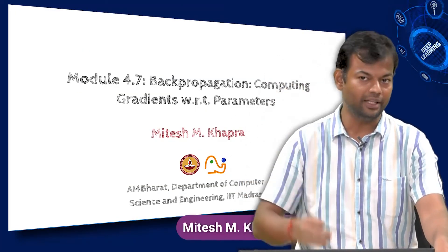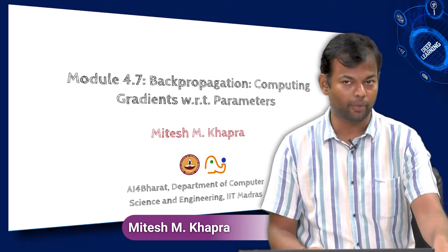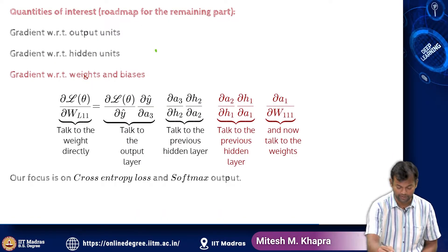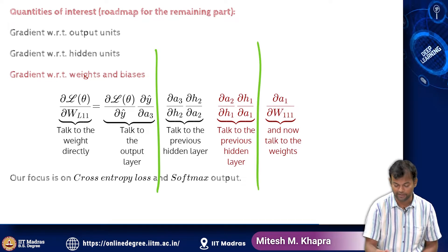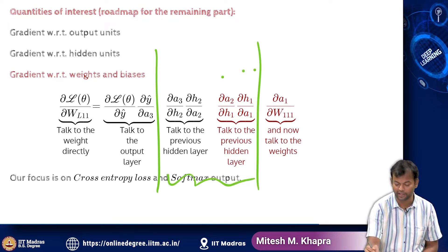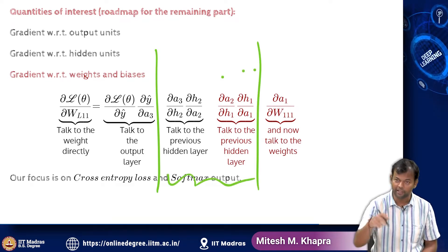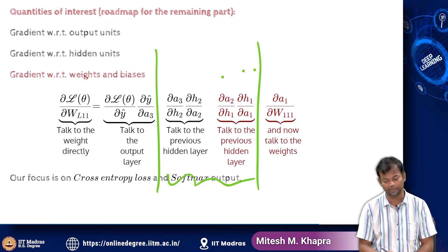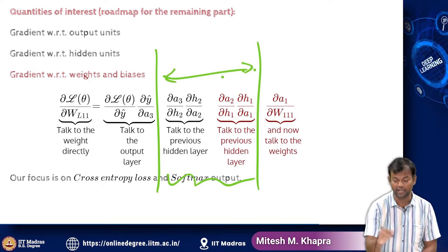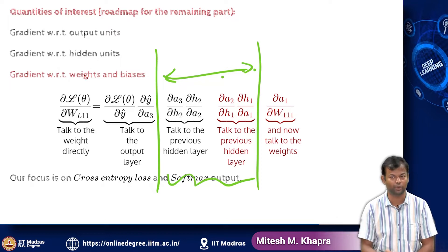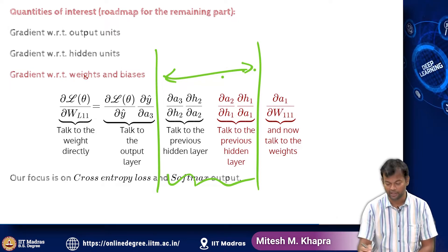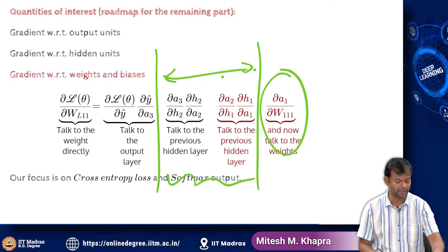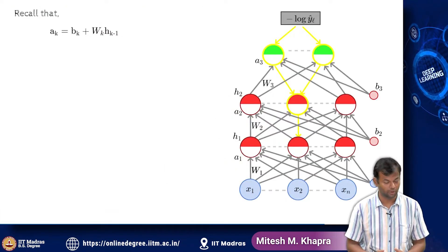We are already almost done. We are now going to talk about computing the gradients with respect to the parameters. We finished the previous parts — we don't care how many hidden layers there are, we just keep applying the same formula again and again. We are done with that repetitive part involving many hidden layers and now we are finally ready to compute the gradients w.r.t. the parameters.